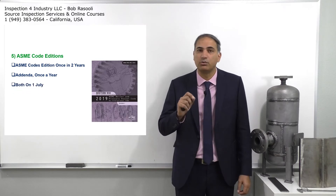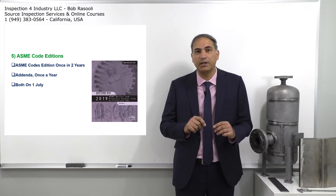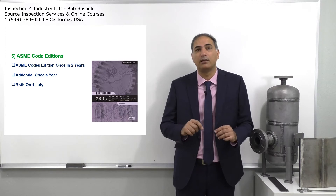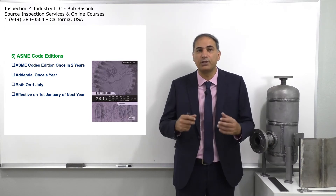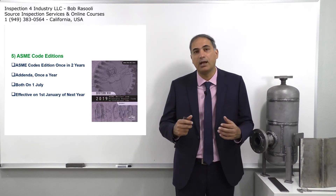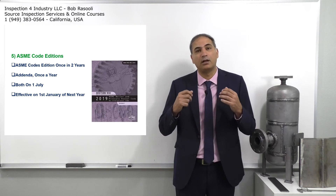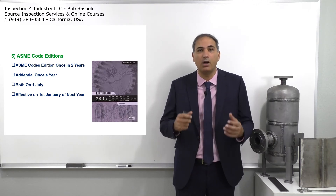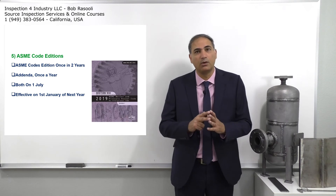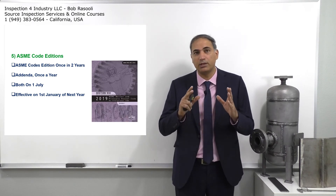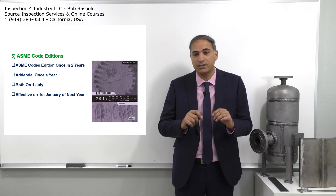Both the new edition and the addenda come on July 1st and become mandatory six months later. For example, the 2019 edition comes July 1st and is mandatory January 2020. The 2020 addenda comes July 1st 2020, mandatory January 2021. The 2021 edition comes July 1st 2021, mandatory January 2022. So every two years we get one new edition and one addenda.